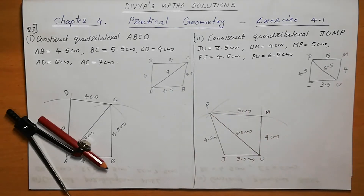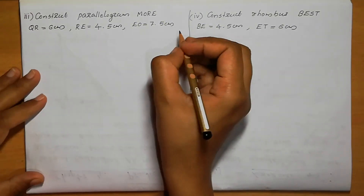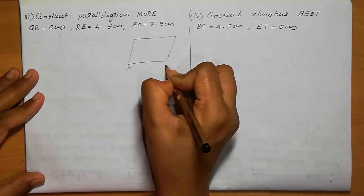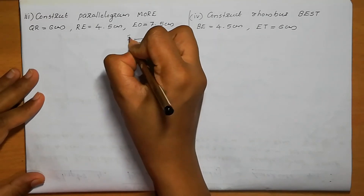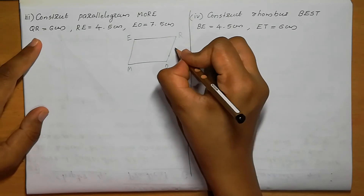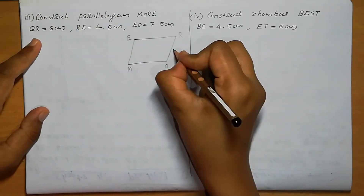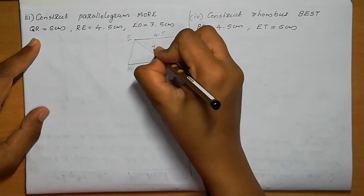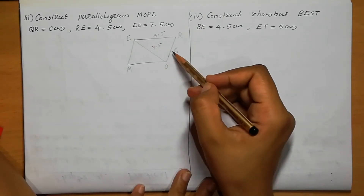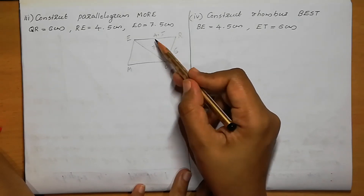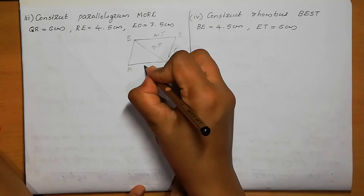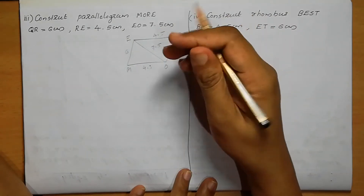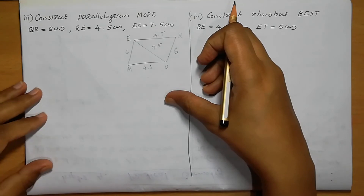Question number 3: Construct parallelogram MORE. OR = 6, RE = 4.5, EO = 7.5. In a parallelogram, opposite sides are parallel and equal. So ER equals MO, meaning MO is also 4.5. And RO equals ME, so ME is also 6. That is the condition of a parallelogram — opposite sides are parallel and equal. Using this we can construct the parallelogram.